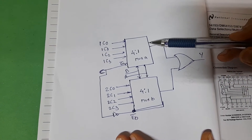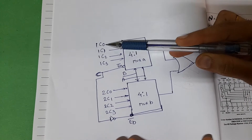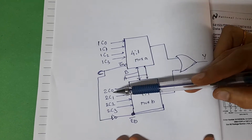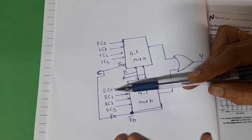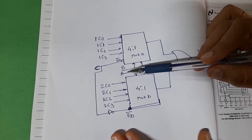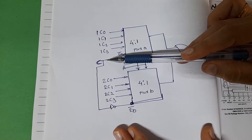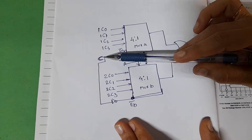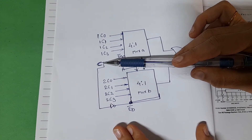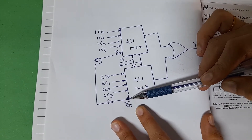Our aim is to build an 8-to-1 mux. So the 4 inputs of the first 4-to-1 mux — 1C0 to 1C3 — act as 4 inputs, and the next 4 inputs are from 2C0 to 2C3. Select lines are common. The third select line is obtained from the enable input: enable input A of the first mux is considered as C, the most significant select line, and its complement is given to EB-bar, the enable input of the second mux.